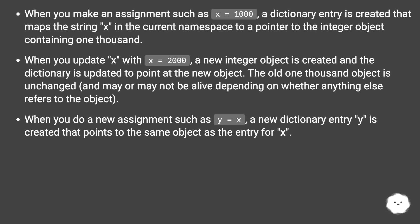When you do a new assignment such as y equals x, a new dictionary entry 'y' is created that points to the same object as the entry for 'x'.